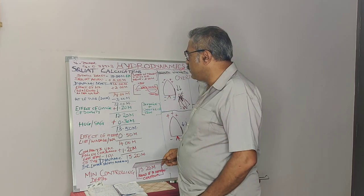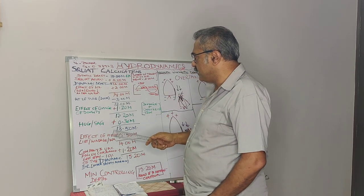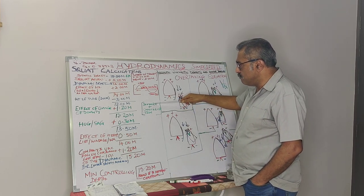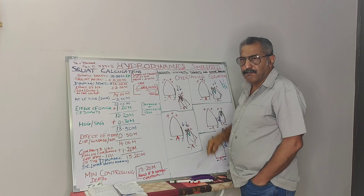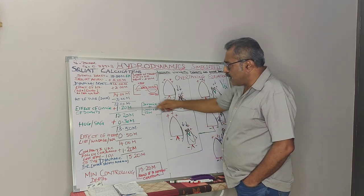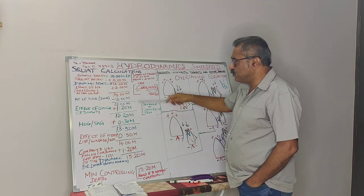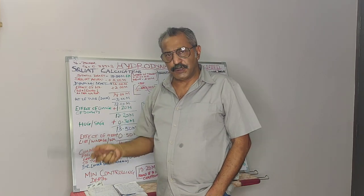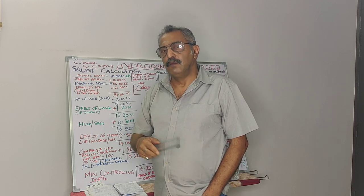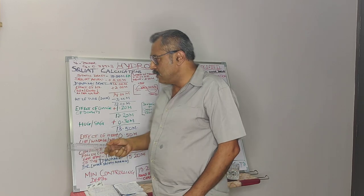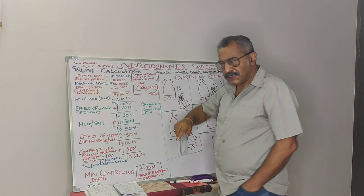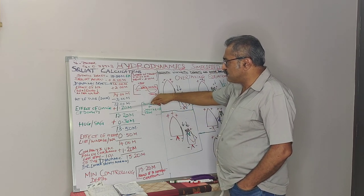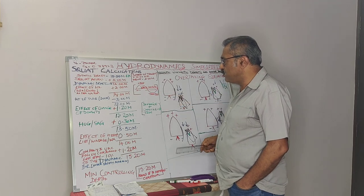The other thing to take into account is change of density. The change of density will have a component of mean sinkage and change of trim. I have taken a figure of 1.2 meters, as the vessel is going from sea water to fresh water — that is, from high density water to low density water. We will have a mean sinkage plus change of trim. The mean draft will be 12 plus 1.2, which is 13.2 meters.